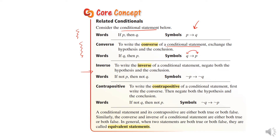Then we have the inverse. To write the inverse of a conditional statement, you negate both the hypothesis and the conclusion. So you take the original statement and put "not" in front of both parts. And then for the contrapositive — this is the opposite of the converse. You can remember that the "con" words go together. So this would be: if not Q, then not P.